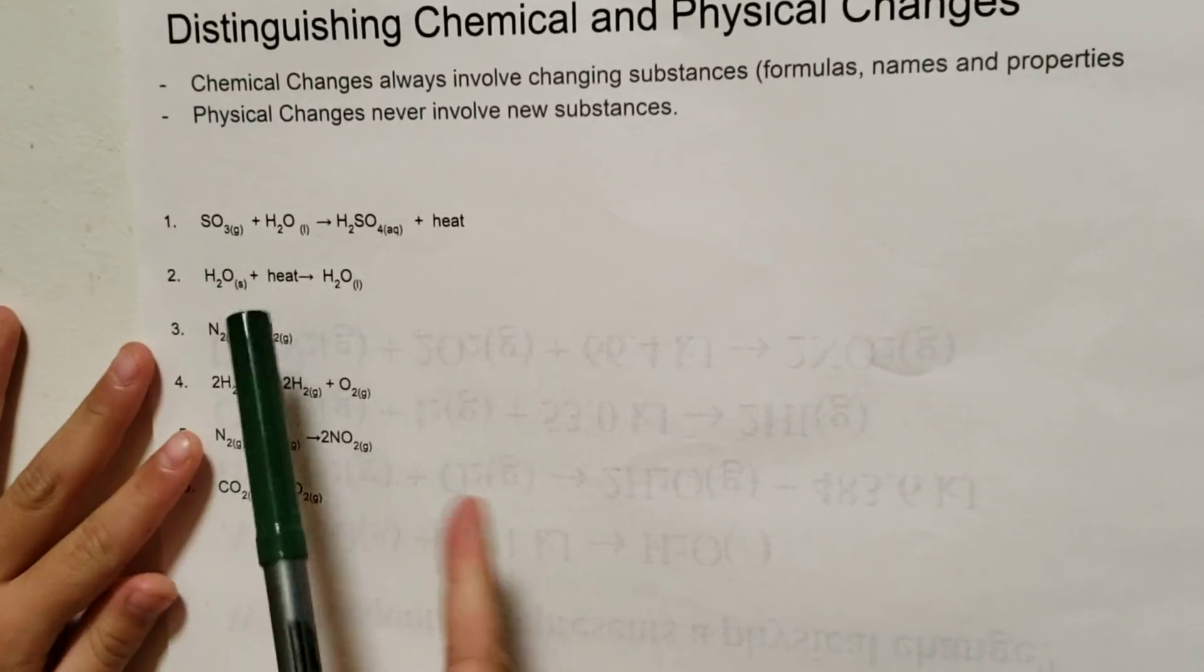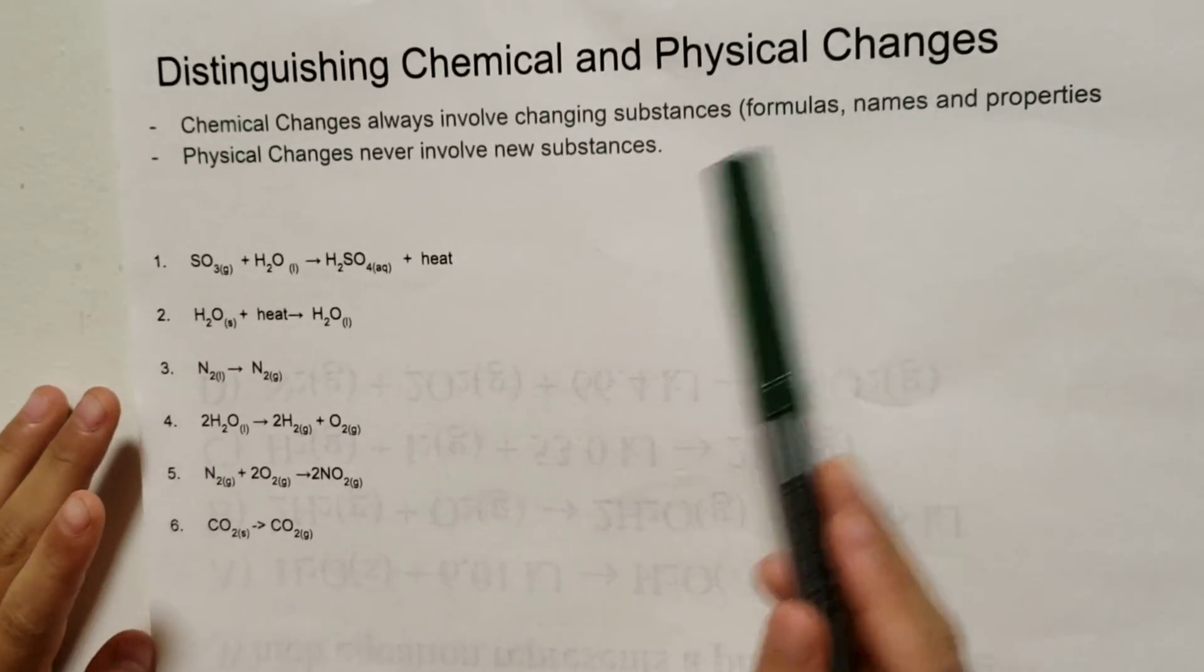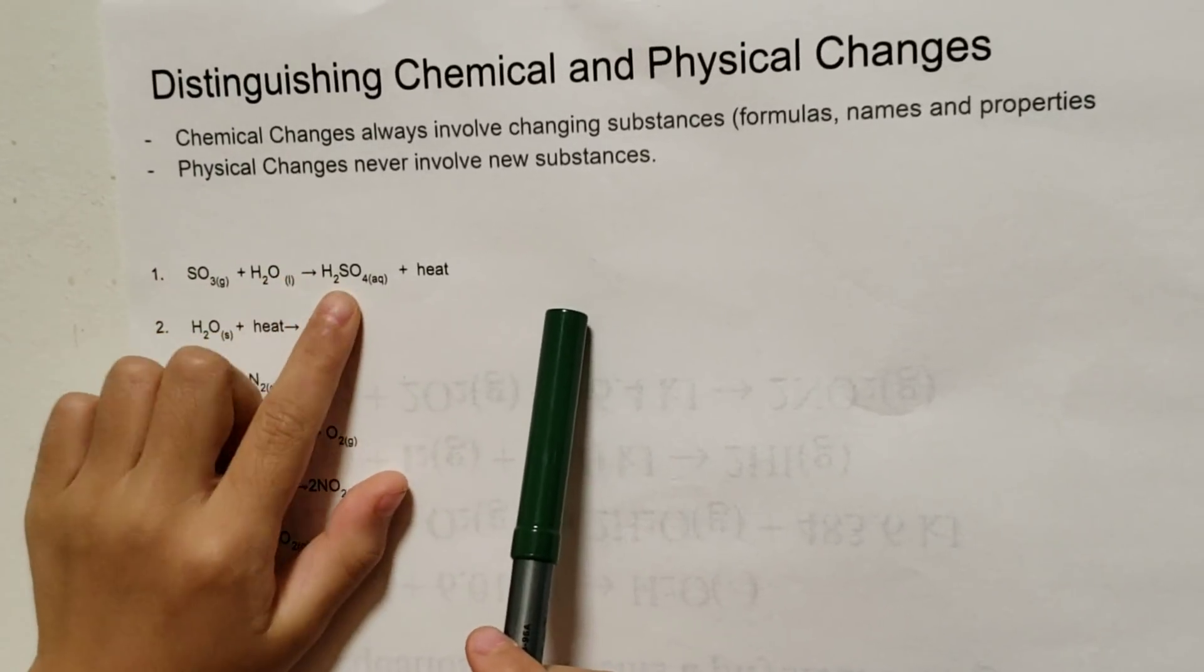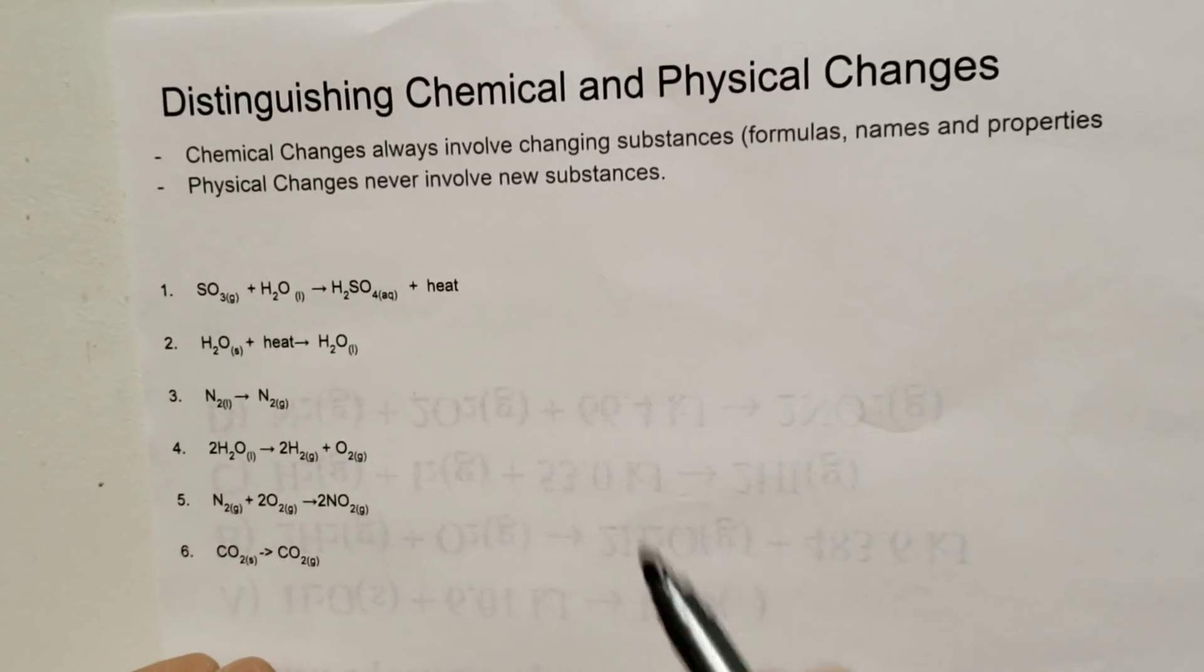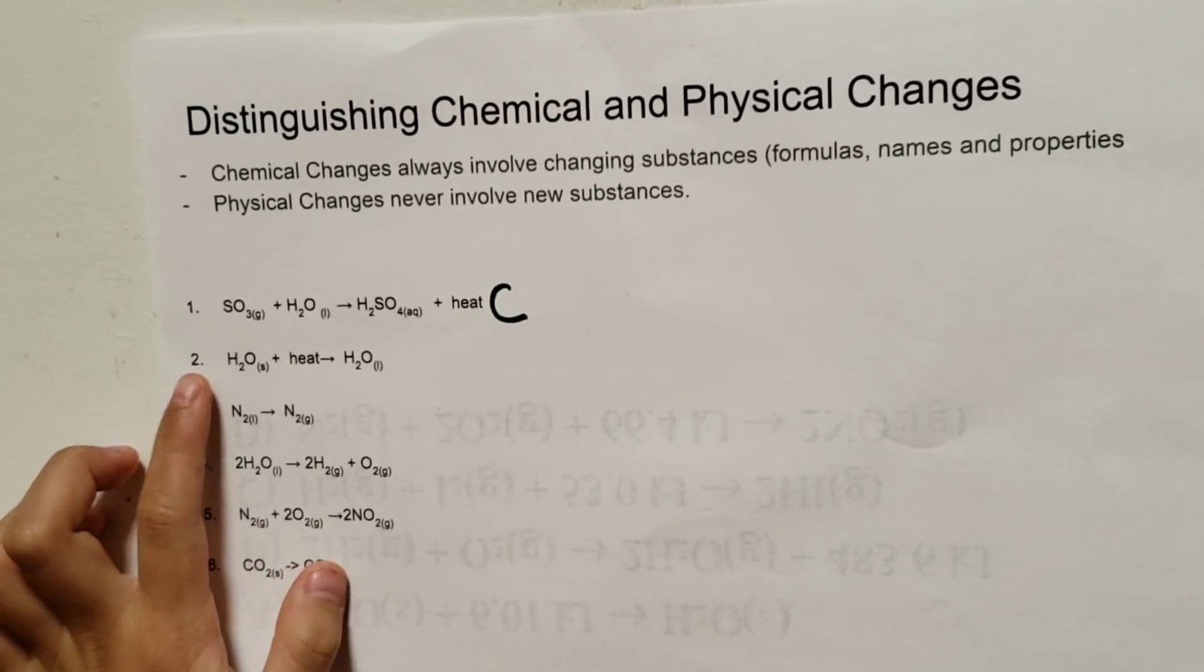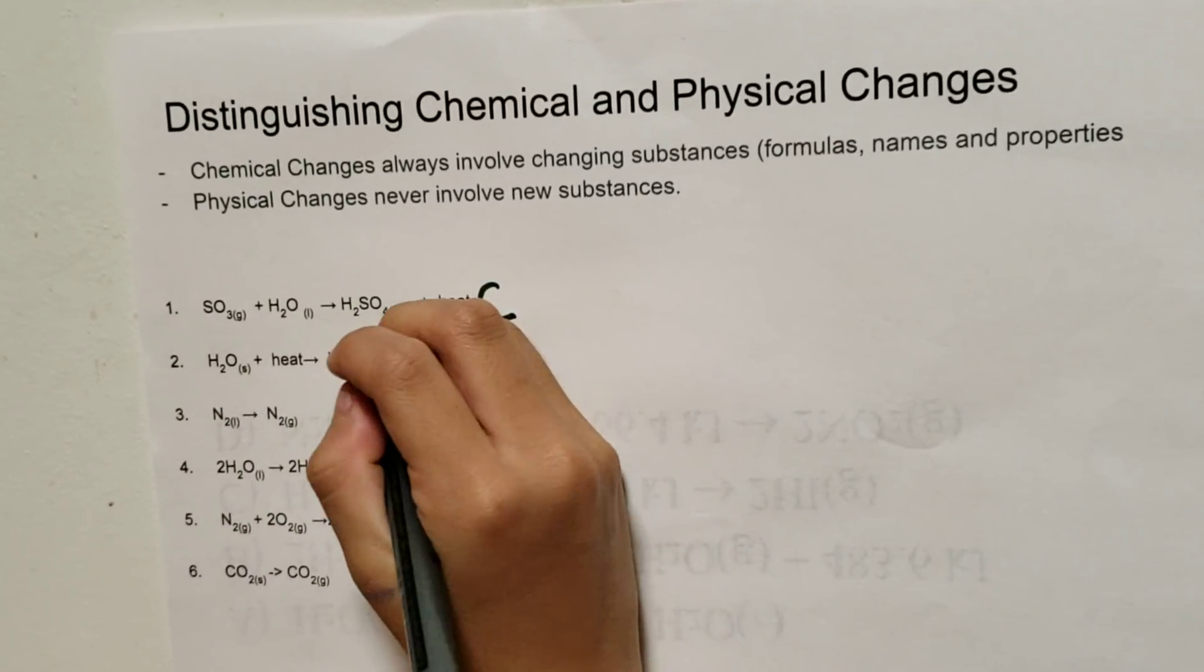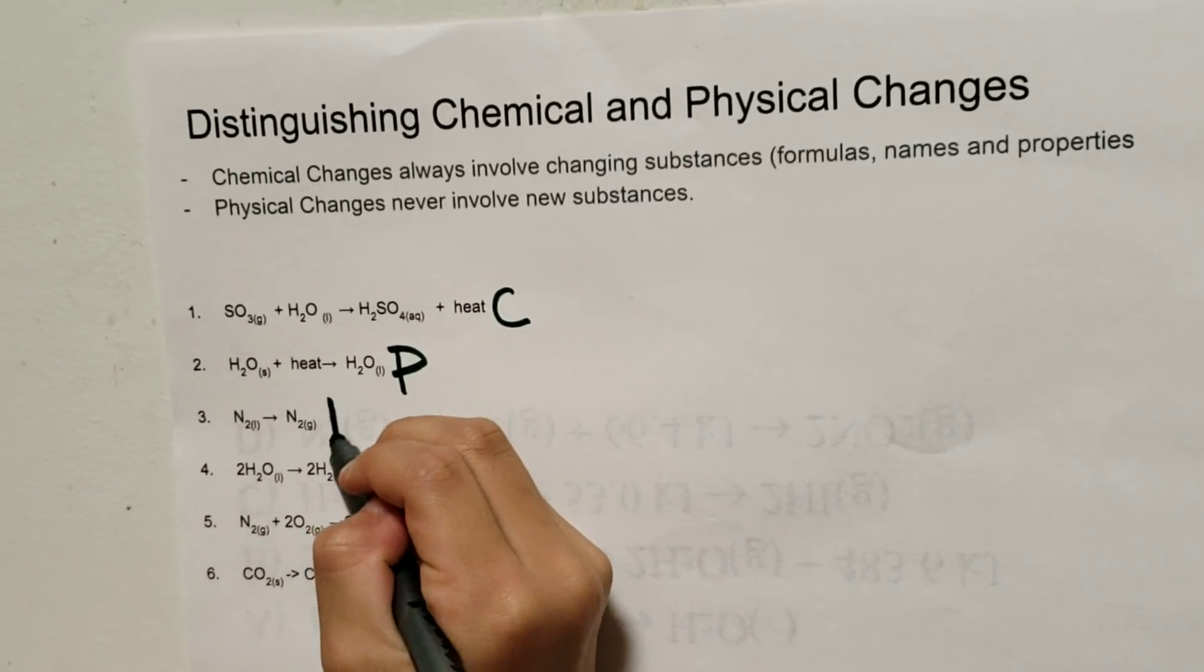Now that we know what chemical and physical changes are, we're going to define them. Notice here that these chemicals are not the same as this chemical, so now we know it's a chemical change. The second one has the same formula, so now we know it's a physical change. These formulas are also the same, so it's a physical.